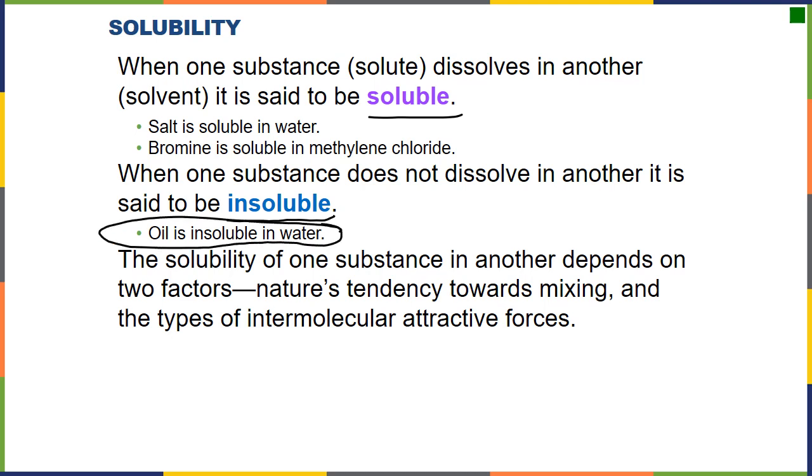When we have two liquids, if a liquid is soluble, we do not use the choice of words soluble. We say it's miscible. And if it is not soluble, for example, oil and water, we actually say that it is immiscible.